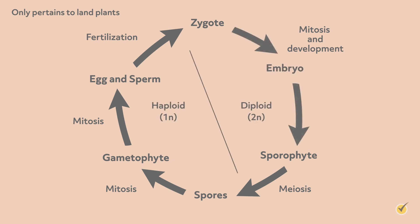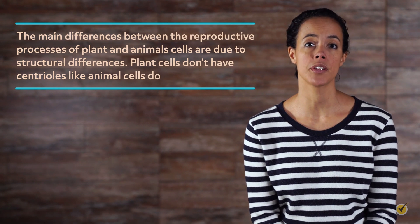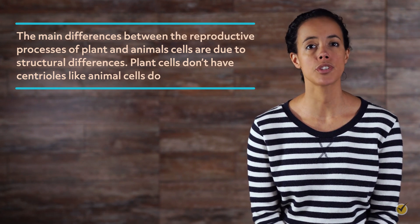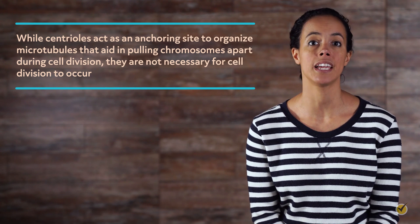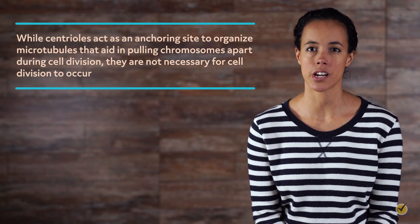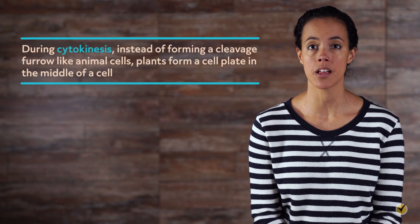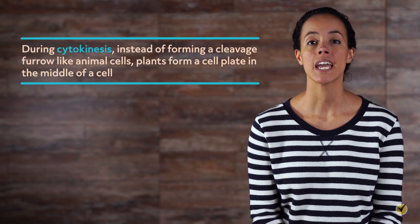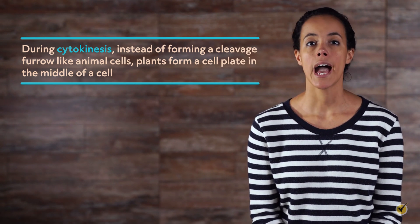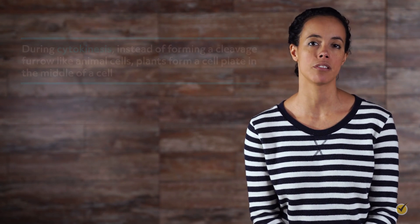Both plant and animal cells generally undergo mitosis and meiosis in similar ways. The main differences between the reproductive processes of plant and animal cells are due to structural differences. Plant cells don't have centrioles like animal cells do. While centrioles act as an anchoring site to organize microtubules that aid in pulling chromosomes apart during cell division, they are not necessary for cell division to occur. The other main structural difference is that plant cells have a cell wall, so during cytokinesis, instead of forming a cleavage furrow like animal cells, plants form a cell plate in the middle of the cell. This plate consists of components from the plasma membrane and cell wall that are delivered in vesicles. The big picture difference is that plant cells have a different life cycle than animal cells.